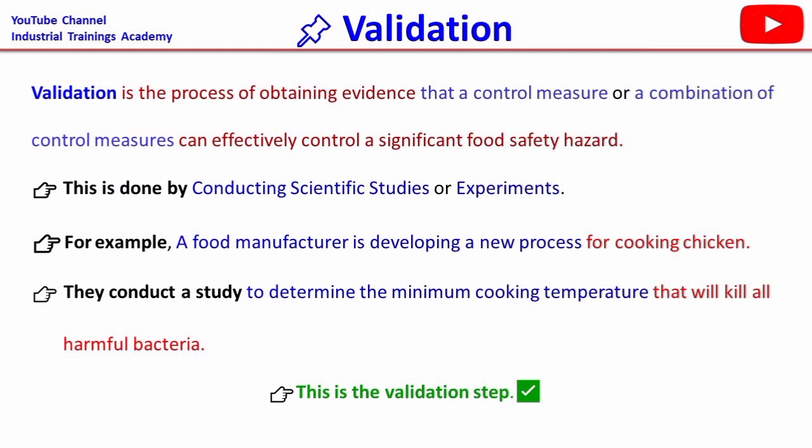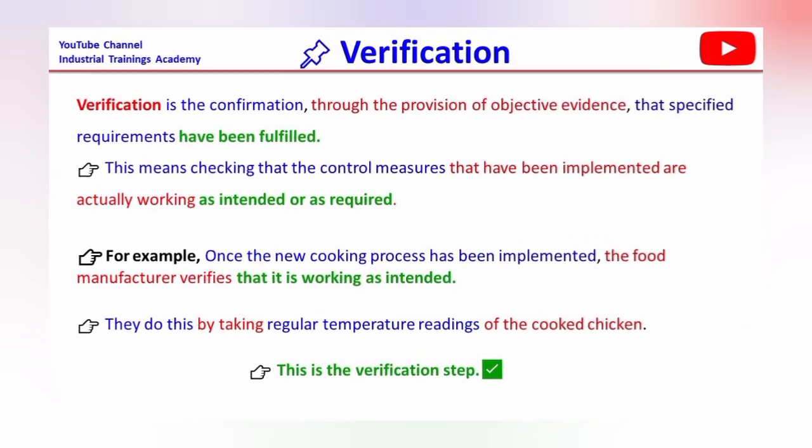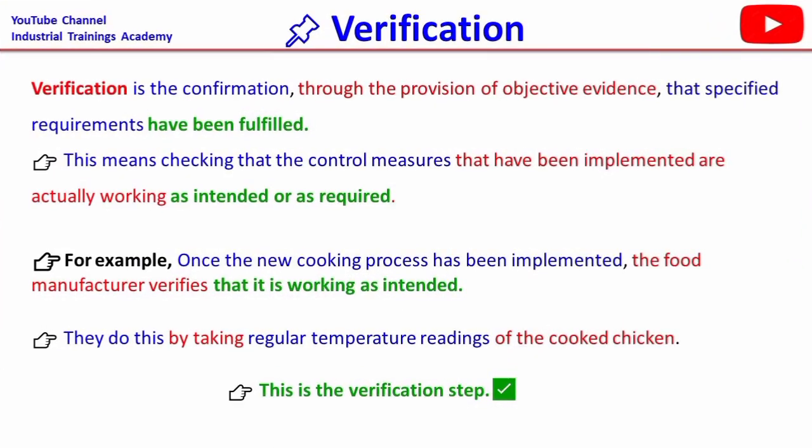That will kill all the harmful bacteria — this is called the validation step. So validation is done before the start of a process, to set the standards and obtain evidence that the control measures are effective to control food safety hazards. Verification is the confirmation through the provision of objective evidence that specified requirements have been fulfilled.